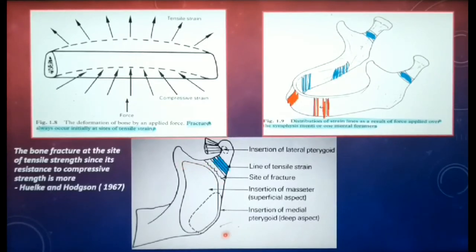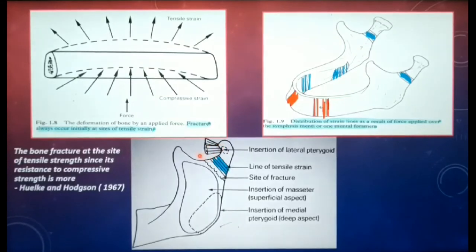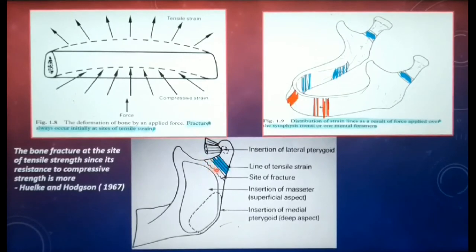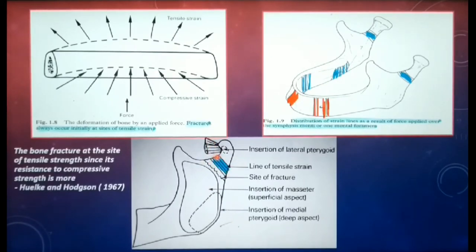The masseter has insertion at the lateral aspect of the ramus, the medial pterygoid at the medial aspect of the ramus, and the lateral pterygoid at the pterygoid fovea at the anterior neck of the condyle. A subcondylar fracture is usually evident just superior to the insertion of the masseter. Therefore, a coordinated action of the masseter and the pterygoids will displace the condylar head in a superoanterior and medial direction.